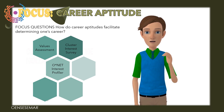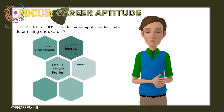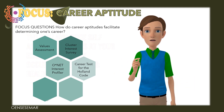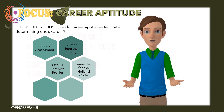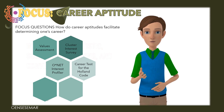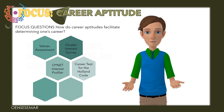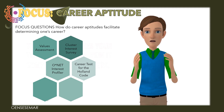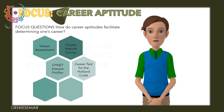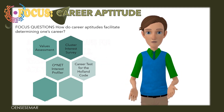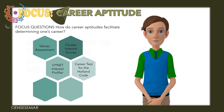Career Test for the Holland Code: The Holland Code's self-assessment looks at your eligibility for six occupational themes — realistic, investigative, artistic, social, enterprising, and conventional. The test determines your top interest area, how it compares to the others, and what this means for your career goals.